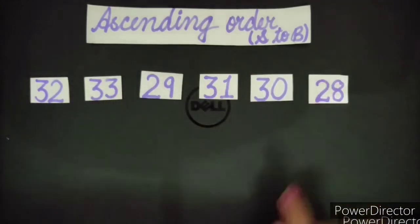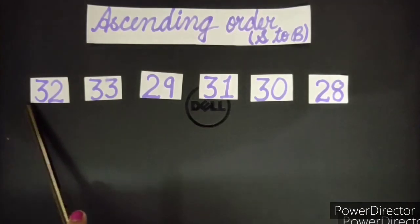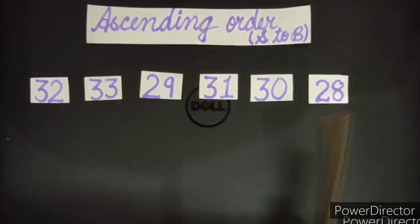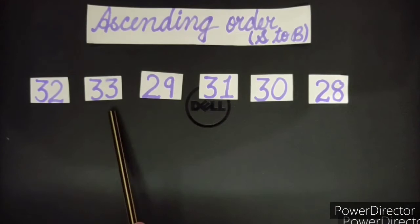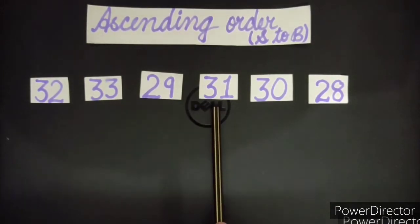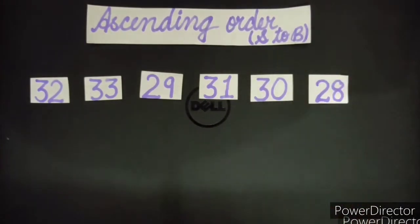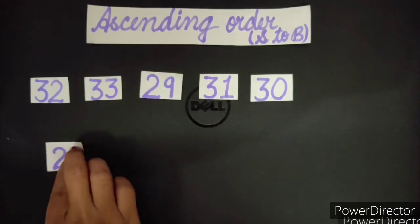Now here we have these numbers. Let's find out the smallest. In saap mein sabsi chota number kaunsa hai? 32, no. 33, no. 29, let's check. 31, no. 30, no. Here this 28. Joi 28 hai, sabsi chota hai. Let's bring it down.